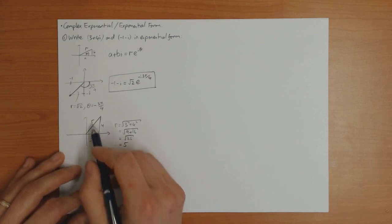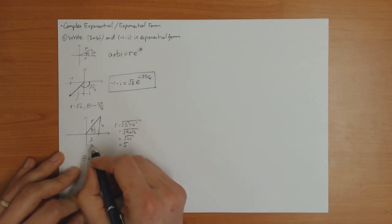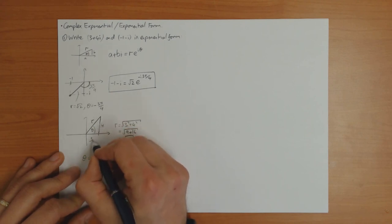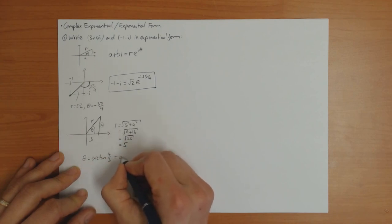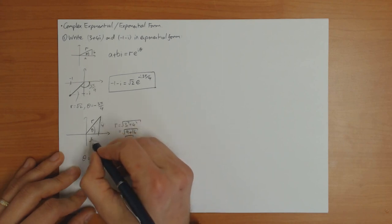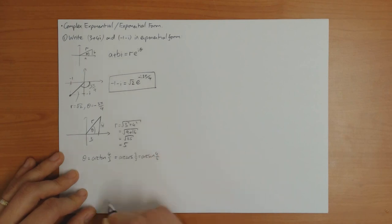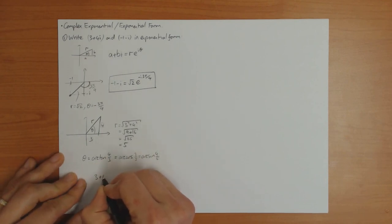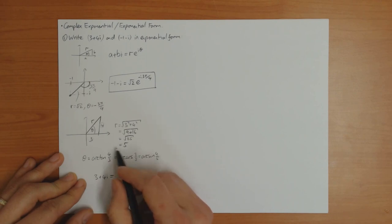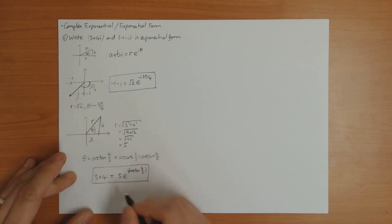Theta does not come out to be anything nice in this case, but you can express it in terms of the arc tangent or arc cosine. For example, theta I can write as arc tan of 4 over 3. Or you could have written it as arc cos of 3 fifths, or even arc sine of 4 fifths. I'll choose arc tan. So therefore we get that 3 plus 4i is equal to 5 times e to the i arc tan 4 over 3. In this case you can't write it in any neater form than that.